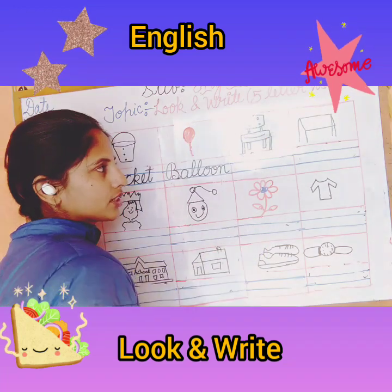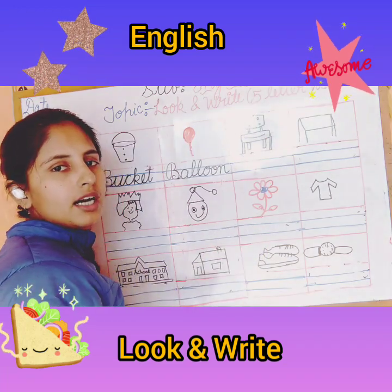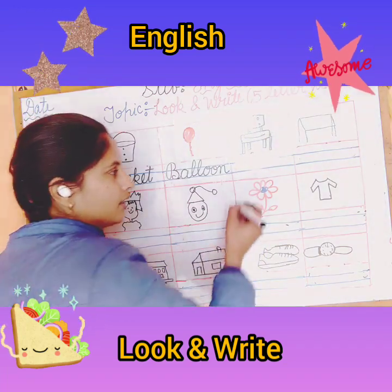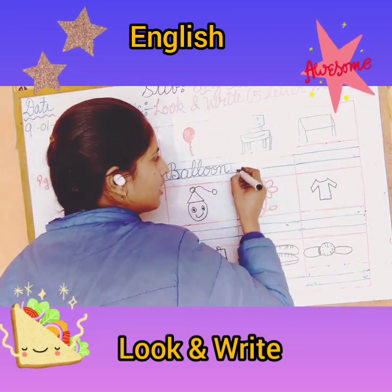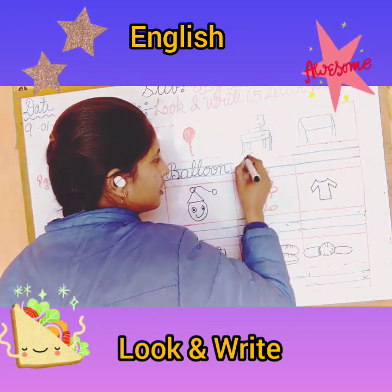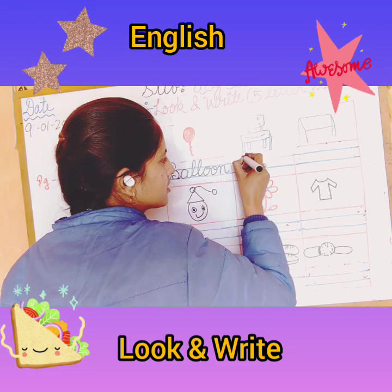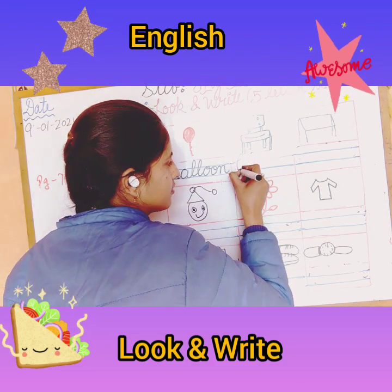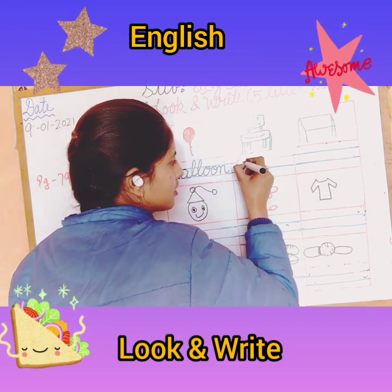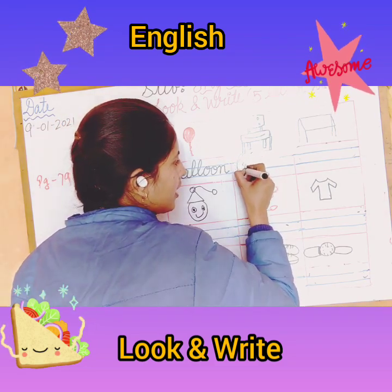See the next picture — what is this? This is a chair. Now you have to write the spelling of chair. C-H-A-I-R, Chair.